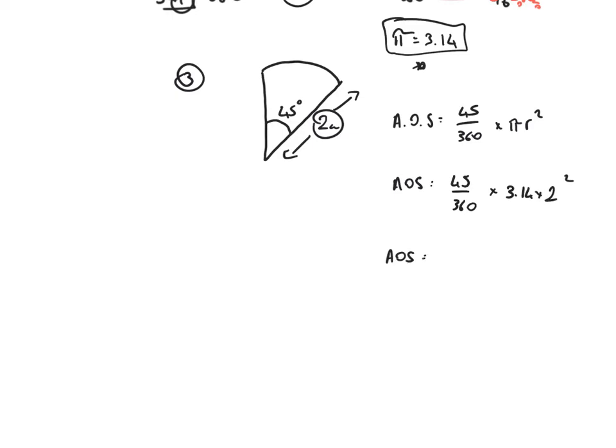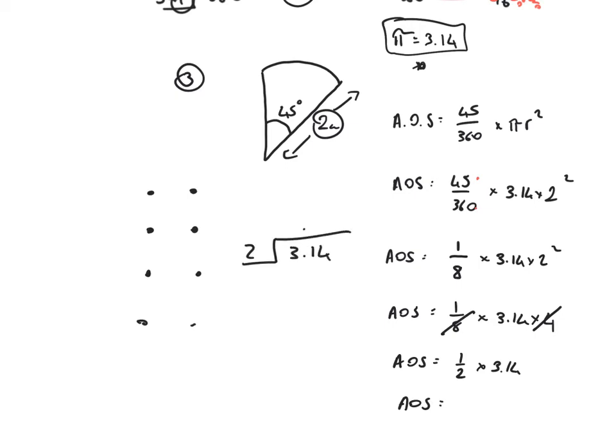45 out of 360 multiplied by 3.14 multiplied by the radius, which is 2 squared. Let's make the numbers a lot smaller by simplifying that down. I can divide top and bottom here by 45. And that will give me 1 over 8 times 3.14 times 2 squared. So 2 squared is 2 times 2. I can then do 4 divided by 8 is 1 half. So that's 1 half of 3.14. 2 into 3.14. 2 into 3 equals 1 remainder 1. 2 into 11 goes 5 remainder 1. 2 into 14 goes 7 times. 1.57 square centimeters.